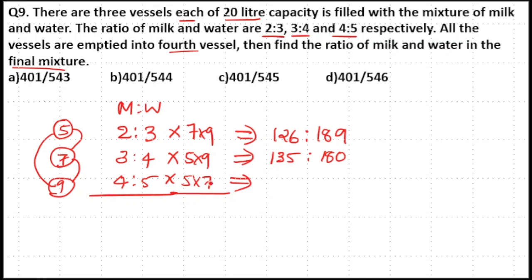Next, 7 into 5 is 35. 35 into 4 equals 70 into 2, that is 140. And 35 into 5 equals 140 plus 35, that is 175.